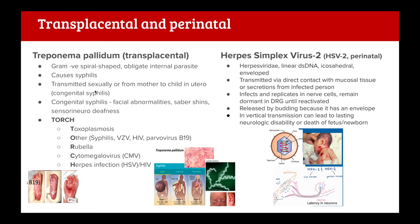TORCH is an acronym for infections a pregnant mother should be aware of: Toxoplasmosis, Other (including syphilis, VZV, HIV, parvovirus B19), Rubella, Cytomegalovirus, and Herpes infection. These are transplacental or perinatal infections. It's important to understand that TORCH exists, though not necessarily all individual details for exams.